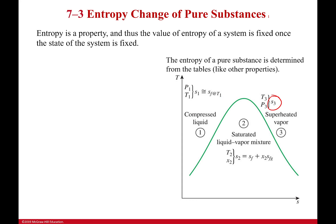Also, if we were between these two lines, I can find my entropy by knowing the quality. So if I know my quality, I can find out my entropy by knowing the entropy of a saturated liquid and I multiply the quality by the entropy change from a saturated liquid to a saturated vapor, sfg.